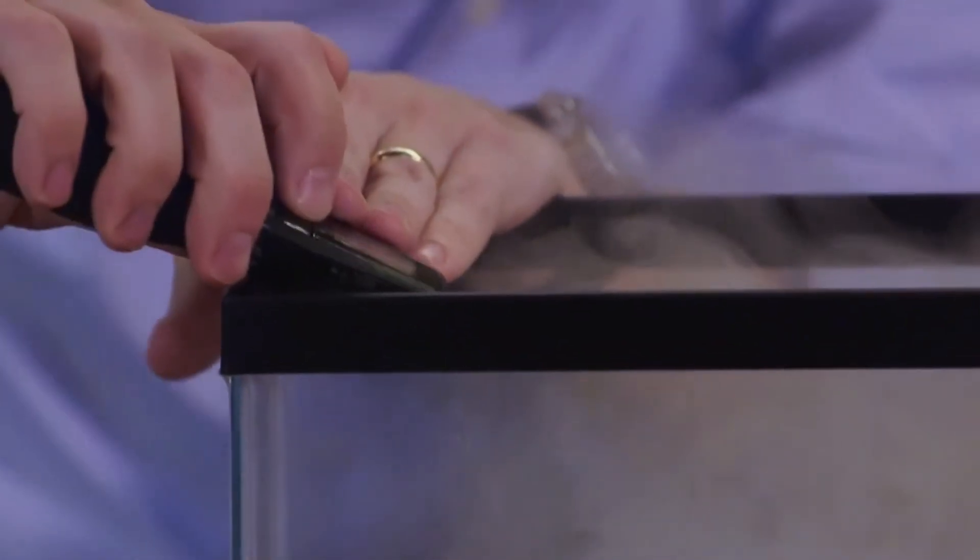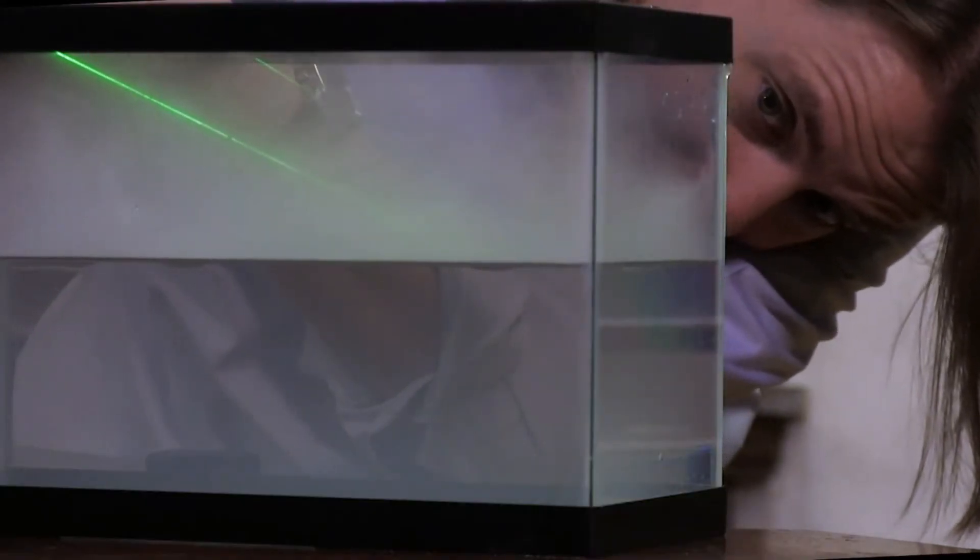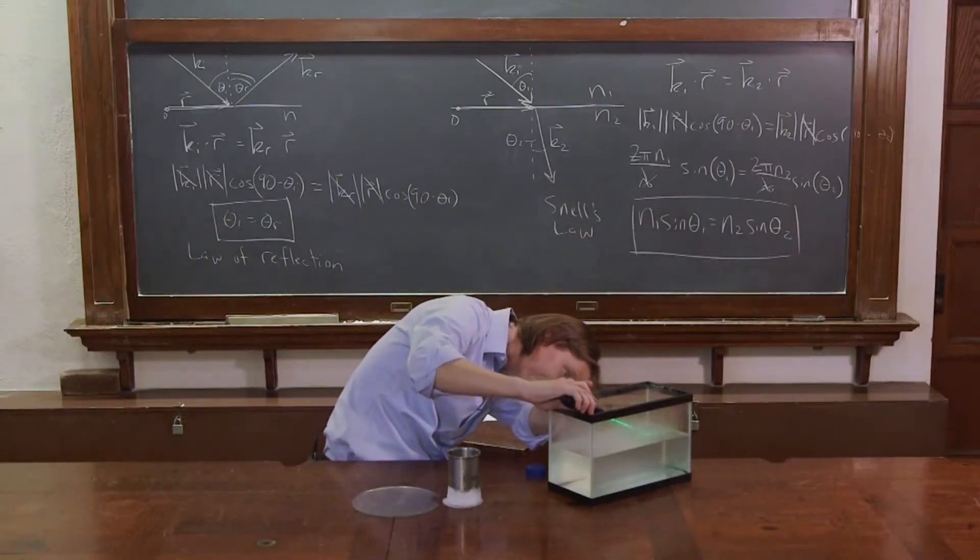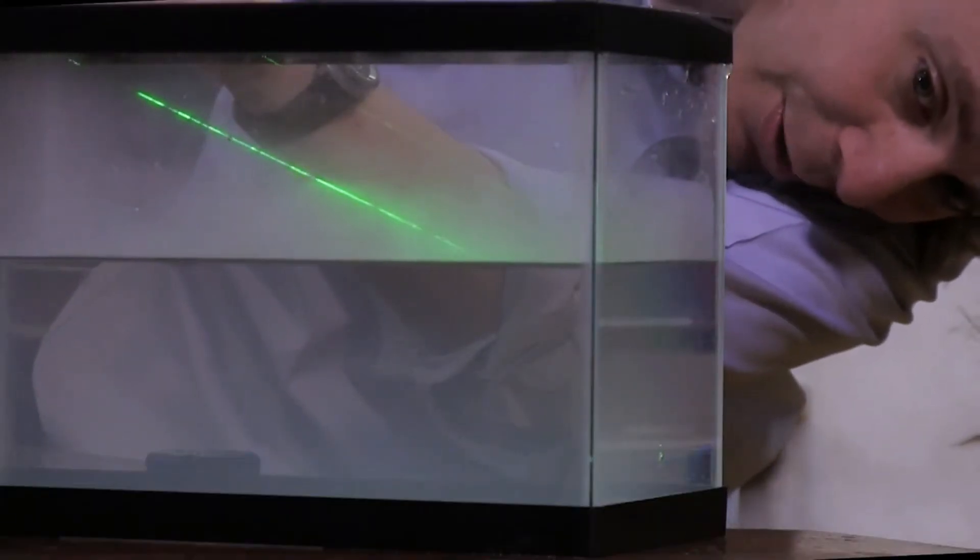And I think you'll be able to see once the dust settles here, the nice bend as the laser beam falls towards the normal. There we go - as it goes from the air above where you're just seeing the scattering off the condensation to the water, where you're seeing scattering because I put something in the water to make it scatter.